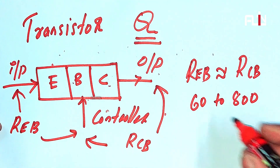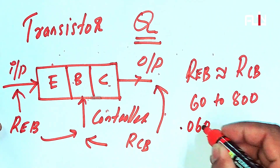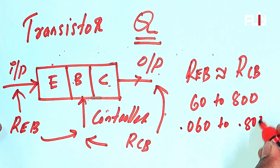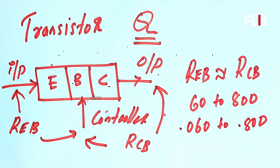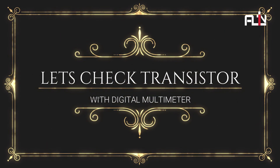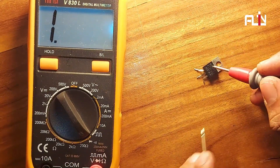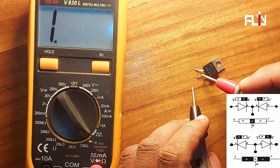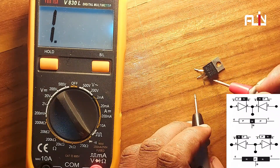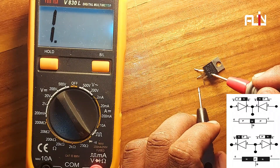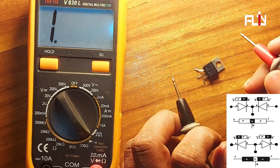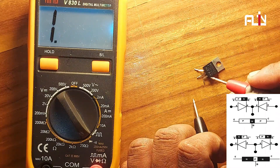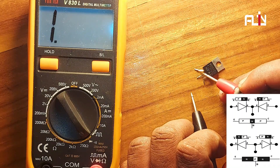Using the digital multimeter, the resistance readings are: 0.060 and 0.800. Further readings show 0.000, 1.00, 2.000, and 0.800.